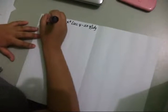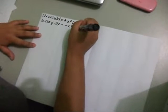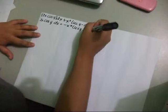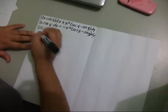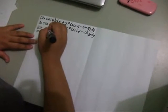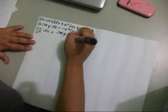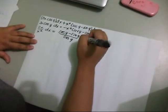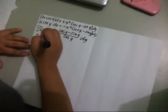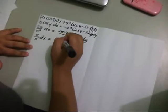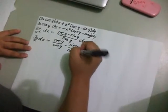So, 2x cosine y dx is equal to negative x squared sec y minus sine y dy. Then, 2x over x squared dx is equal to sec y minus sine y over cosine y dy. This can be written as 2 over x dx is equal to sec y over cosine y minus sine y over cosine y dy.